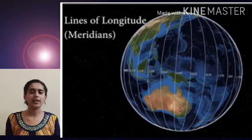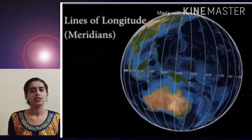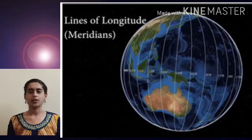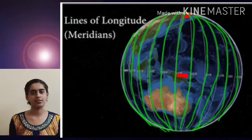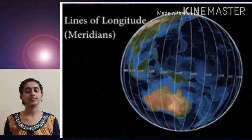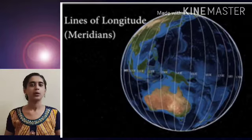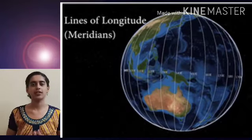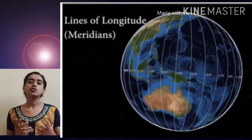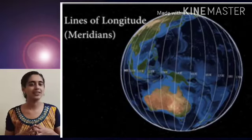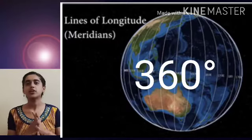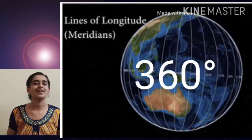Are all latitudes of equal length? No, they are not of equal lengths. Whereas longitudes are of the same length. But till now we were talking about the distance between the longitudes being different — the length of the longitudes from north to south is the same. How many latitudes do we have? We have 181 latitudes. Now, how many longitudes do we have? A circle has 360 degrees. In the same way, a globe is also divided into 360 degrees. That means we are having 360 longitudes.